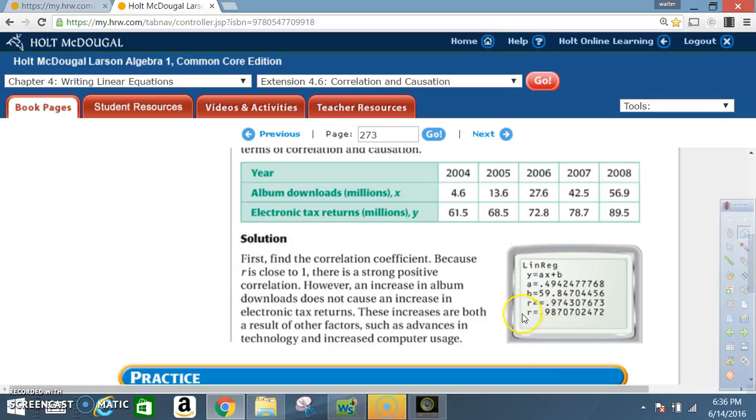If you look at the graphing calculator, r is the value right here, and that value is 0.987, which is very close to 1. Now, since we do not have graphing calculators for your problems today, I'm going to give you the r values. Because r is close to 1,